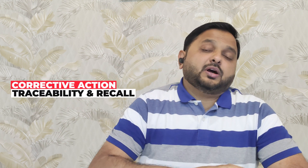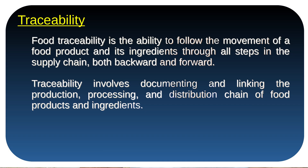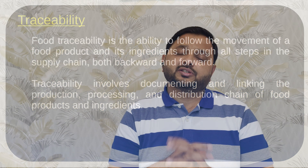Now, briefly touching on traceability and recall — both are separate topics we will cover in upcoming prerequisite videos after this HACCP series. Traceability is the system maintained in food manufacturing companies to ensure that at each stage there is a record of the product and its ingredients, so that if a product is found to have a CCP violation, we know which stages it passed through and what ingredients were included. This system is crucial for conducting proper corrective actions and for managing recalls.